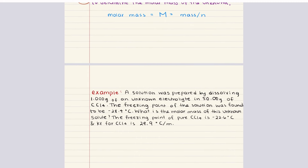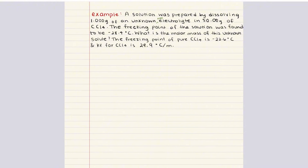Let's put this into effect with a practice problem. A solution was prepared by dissolving 1 gram of an unknown non-electrolyte in 50 grams of carbon tetrachloride. The freezing point of the solution was found to be negative 28.4 degrees Celsius. What is the molar mass of this unknown solute? We're given the freezing point of pure carbon tetrachloride as negative 22.6 degrees Celsius and the freezing point depression constant K_f for carbon tetrachloride. We'll follow the four steps to solve this.